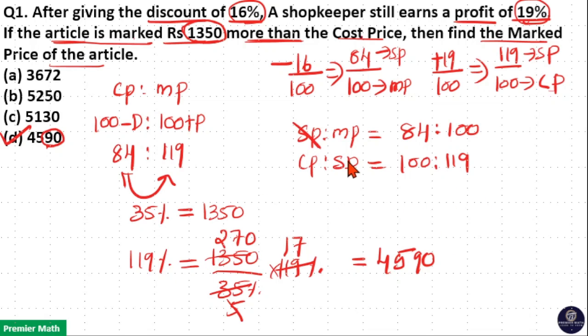Now I can cancel sell price. Now the remaining ratio is cost price and marked price ratio, which is equal to 100, 100 to 84 to 119.